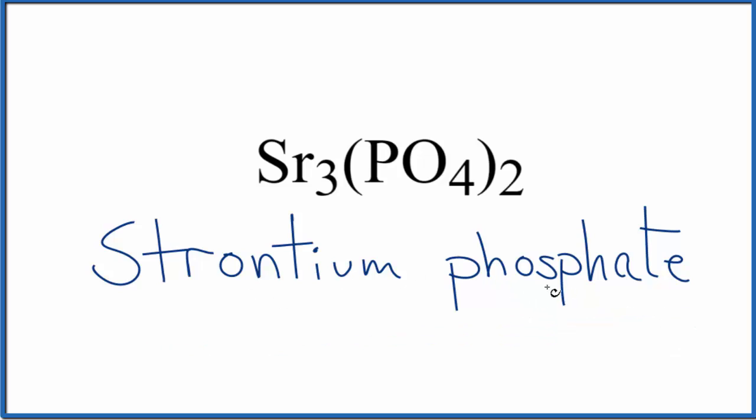If you are given the name, strontium phosphate, and asked to write the formula, strontium has a 2+ ionic charge, it's in group 2. The whole phosphate ion is 3-. So in order for the charges to balance, we'll need two phosphates, 2 times 3- is 6-, and three strontium atoms, 3 times 2+ is 6+. That's where we get the Sr3(PO4)2.